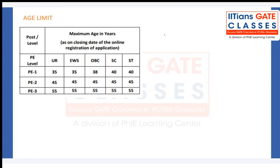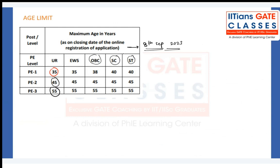Regarding age limits: the maximum age for Project Engineer 1 is 35 years, for Project Engineer 2 it is 45 years, and for Project Engineer 3 it is 45 years - all as on the closing date of 8th September. For reserved categories, OBC gets 3 years relaxation and SC/ST get 5 years relaxation. For PwD candidates, 10 years of relaxation is provided, making the effective upper limits 45, 55, and 65 for PE1, PE2, and PE3 respectively.